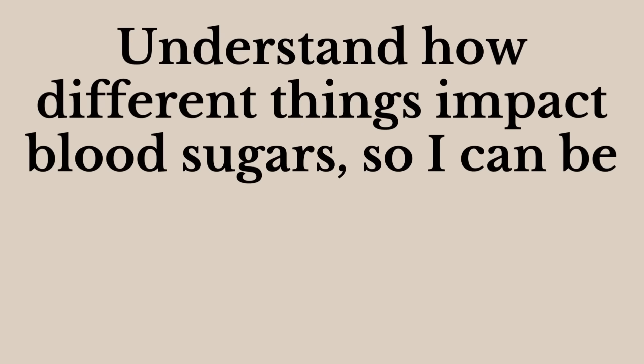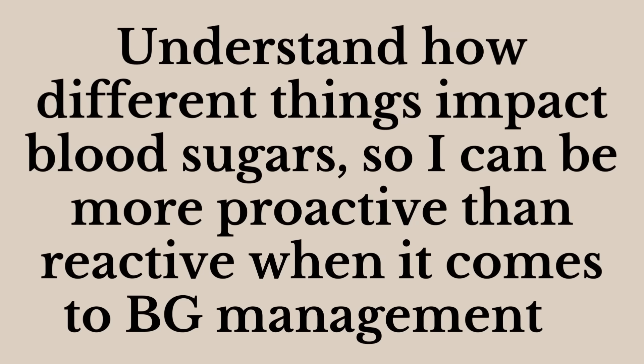The fourth and final thing I do to keep my A1C below 6.5% is understanding how different things impact blood sugars, so I can be more proactive than reactive. Upwards of 22 things can impact blood sugars, so when we say diabetes is a full-time job, we're not exaggerating. I don't claim to know how all 22 things impact my blood sugars, but it's important to pay attention and learn the things that impact yours the most. We all know carbohydrates affect blood sugars, but do you also pay attention to sleep quality and stress levels?